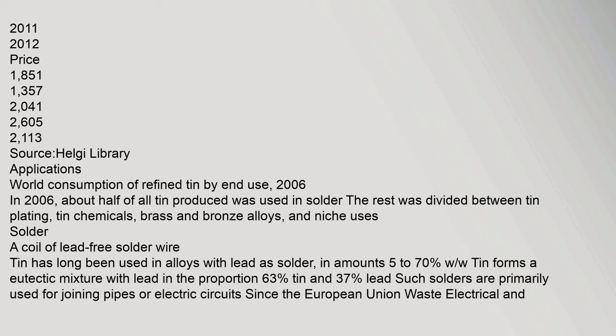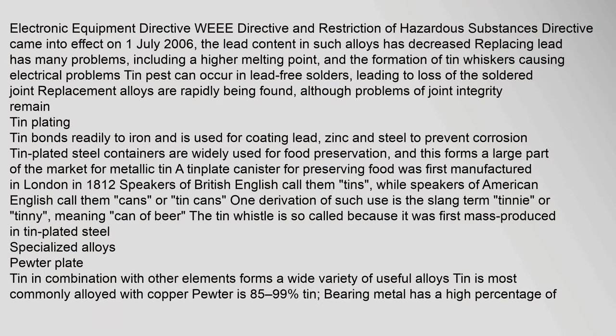In 2006, about half of all tin produced was used in solder; the rest was divided between tin plating, tin chemicals, brass and bronze alloys, and niche uses. Tin has long been used in alloys with lead as solder, forming a eutectic mixture at 63% tin and 37% lead. Such solders are primarily used for joining pipes or electric circuits. Since the EU WEEE and RoHS directives came into effect on 1 July 2006, the lead content in such alloys has decreased. Replacing lead causes problems including a higher melting point and the formation of tin whiskers causing electrical problems.